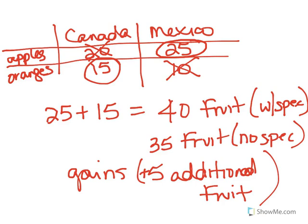That's what we're looking for. With specialization and trade, when you can identify comparative advantage, more goods and services will be produced overall than if there was no specialization in trade. We did have gains — there are five additional pieces of fruit produced when these countries specialize. Now we have to negotiate and figure out how those additional five pieces of fruit are going to be divided between Canada and Mexico.